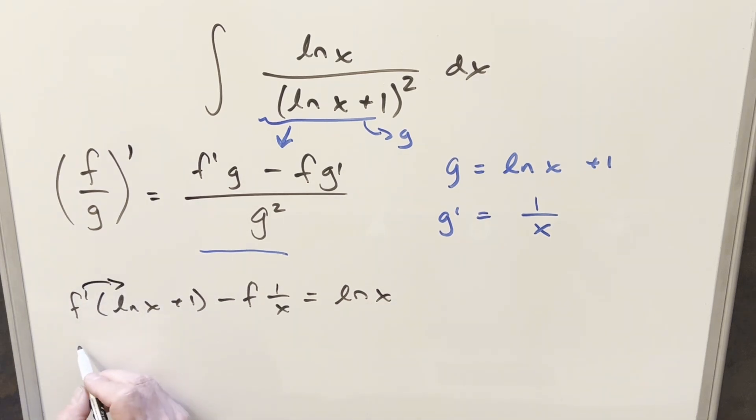What I can do is kind of distribute this out, and we're going to say f prime x times natural log x plus distributing f prime times 1 is going to be f prime minus f 1 over x, and this needs to be equal to ln x.